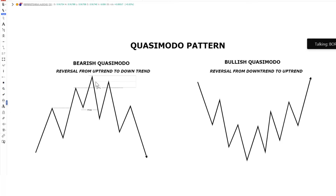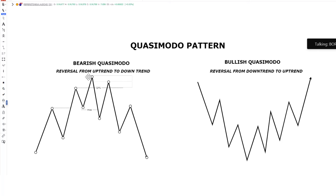We call it a QML level because we are marking this high, but inside this level we have an order block. This is the confluence you need: market structure shift, QML level, and an order block inside the range. It's now left for you to add other confluence like liquidity concepts to make it a high probability trading opportunity. You can mark the QML level and also try to identify the order block inside the range, or even your supply level, because price is going to change its trend. When price comes back to retest, you can look to enter aggressively or drop to a lower time frame to get your confirmations.